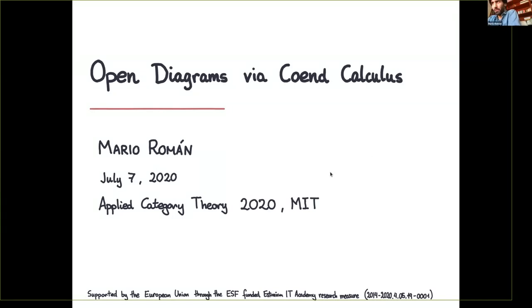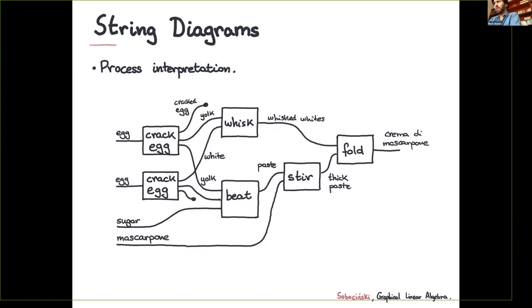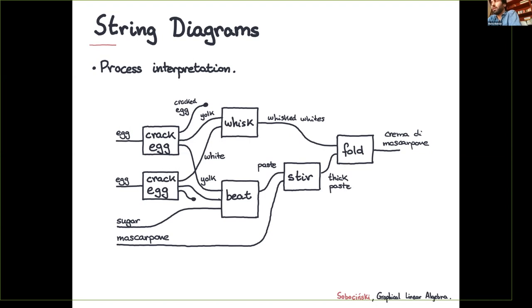Let me first introduce the pre-formal notion we are going to be trying to capture here — the idea of incomplete string diagrams or diagrams with holes. You already know about string diagrams and the process interpretation of monoidal categories, where objects or wires are interpreted as systems.